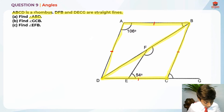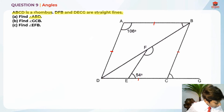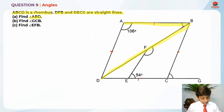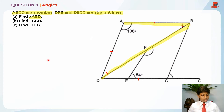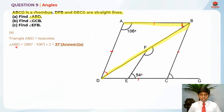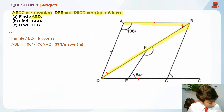Find angle ABD. A is over here, B over here and D over here. Like I said, this is an isosceles triangle, so this angle is equal to this angle. In order to find angle ABD, we take 180 degrees minus 106 degrees divided by 2, because there are two equal angles, which gives us 37 degrees. So 37 degrees is also for here and also for here.